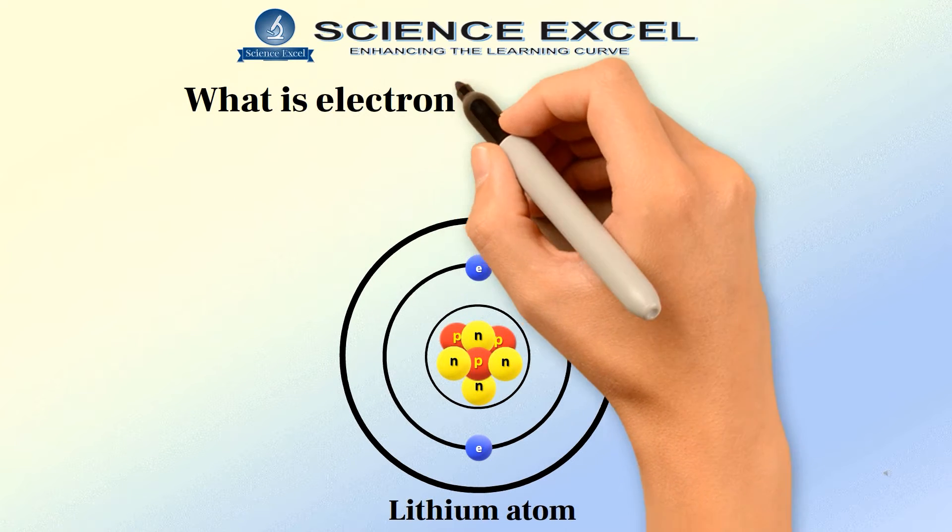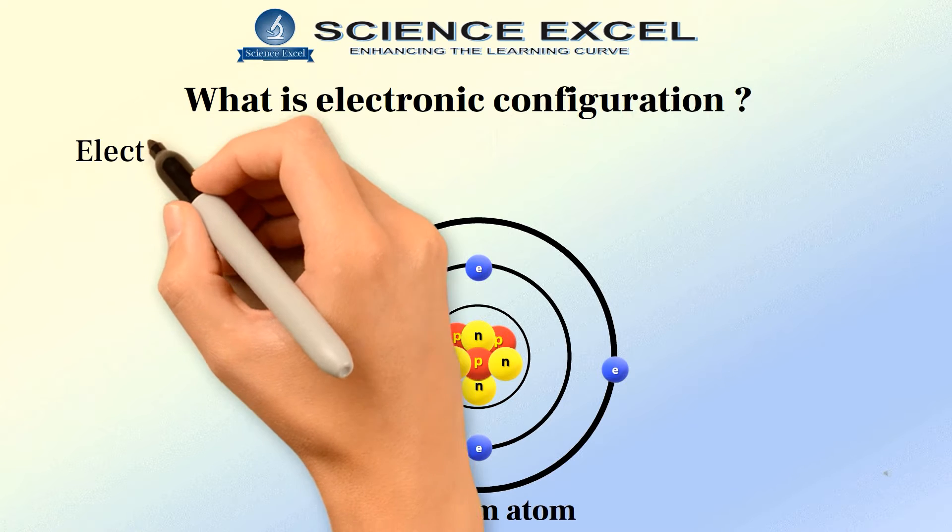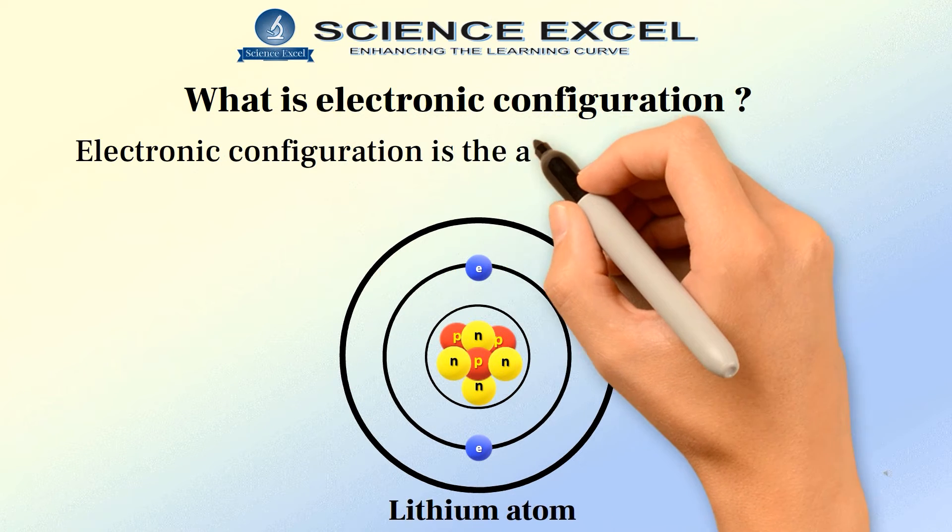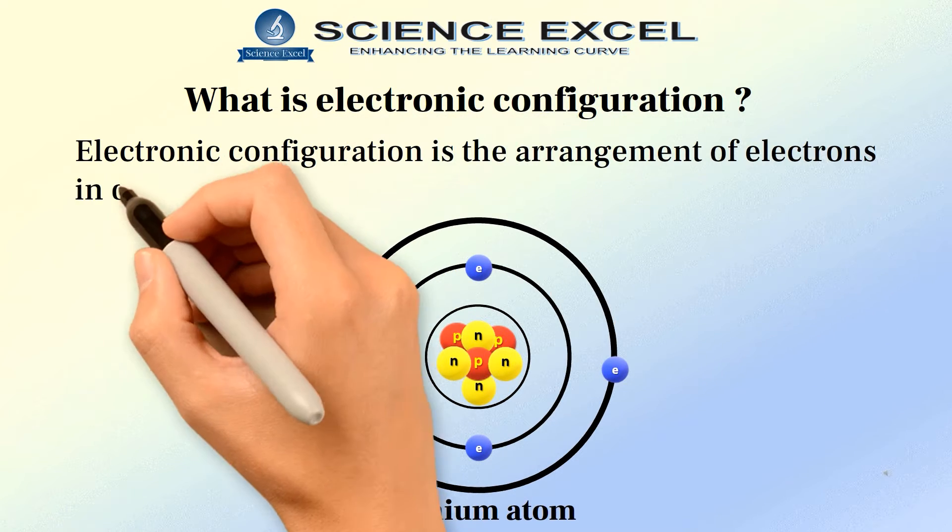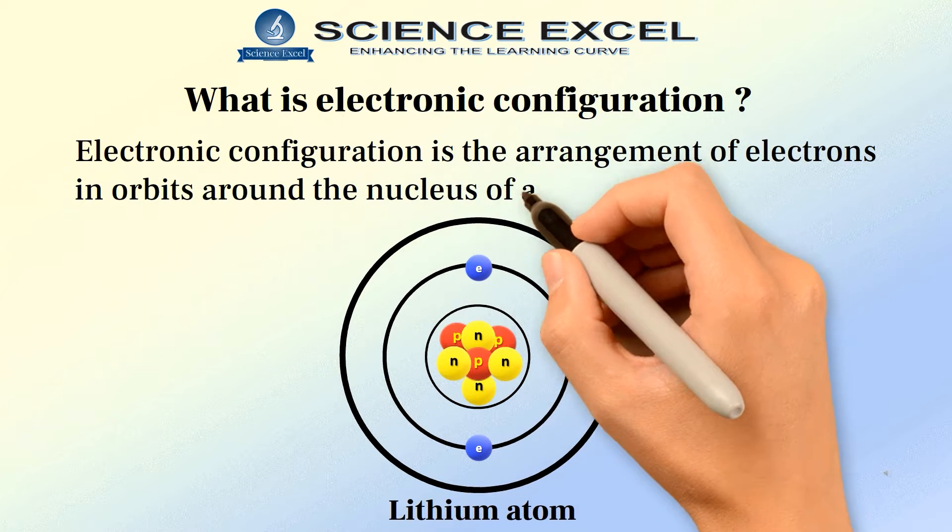What is electronic configuration? Electronic configuration is the arrangement of electrons in orbits around the nucleus of an atom.